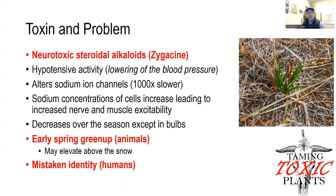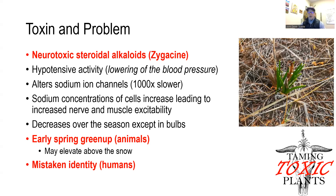The main problem with grazing animals occurs in the spring, when we have that initial greenup of death camas. As you can see in this picture I took last spring just east of Laramie, it's really the only thing greening up substantially, so a grazing animal might think this is a very nice thing to consume at that time of year. In addition, this may be one of the only things that elevates above the snow, so access might become a driver of animal intake. For humans, there are also big problems because they have often mistaken death camas for a wild onion, and there's evidence this goes back many, many years.